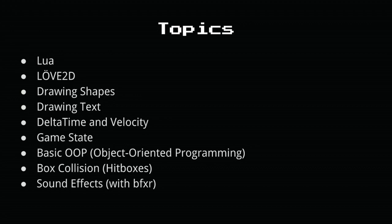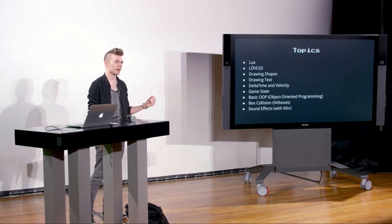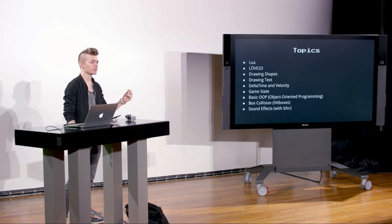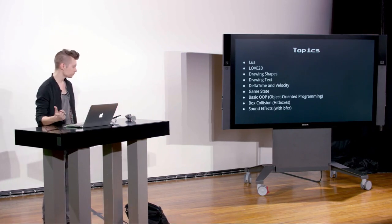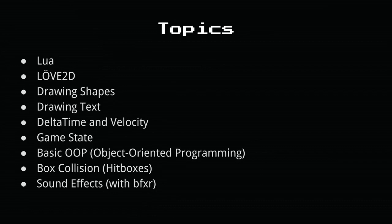Today we'll cover basic principles as we get our feet wet with game development: drawing shapes, drawing text — both big aspects of Pong, which is a simple game based on shapes and text moving around the screen. We'll talk about delta time and velocity, where delta time is arguably one of the most important variables in any game framework — the amount of time elapsed since the last frame of execution, measured in Love2D in fractions of seconds. We'll also cover game state, because you can be at the title screen, playing, or in a menu, and you want different update and rendering logic depending on state.